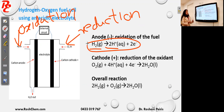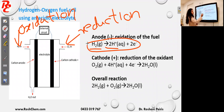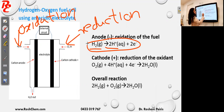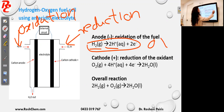H₂ is undergoing oxidation, therefore it is the reductant. In your data book, check the right-hand side of the electrochemical series. Hydrogen gas will undergo oxidation to make H⁺ — you can find this reaction at zero volts.